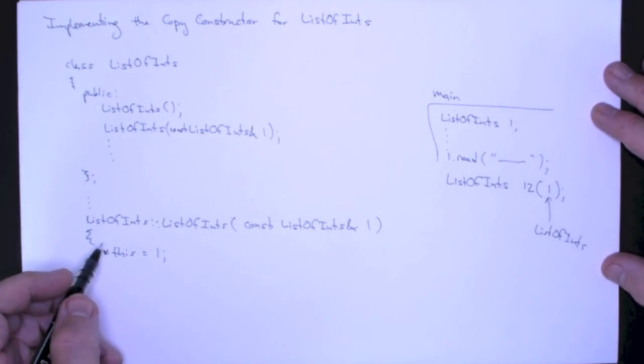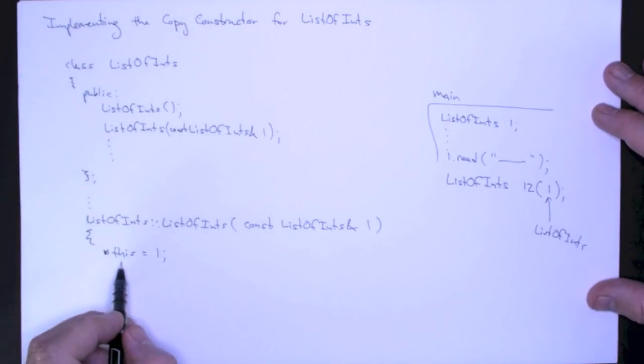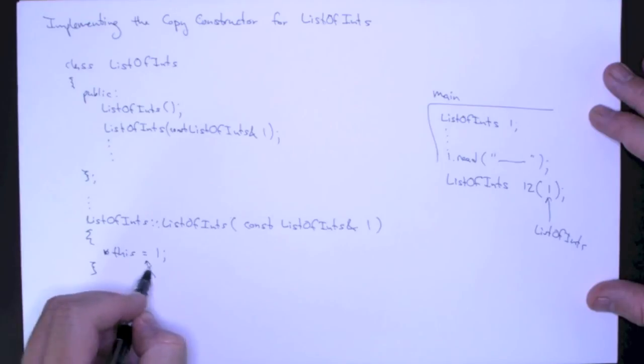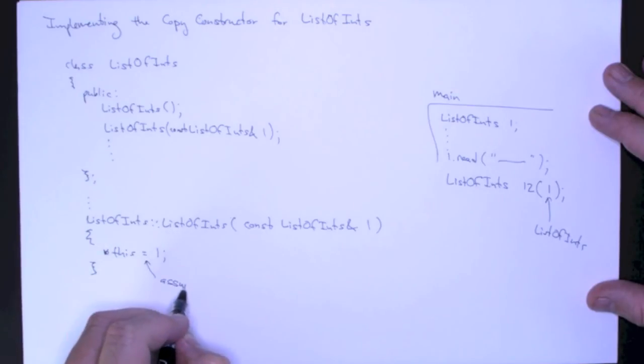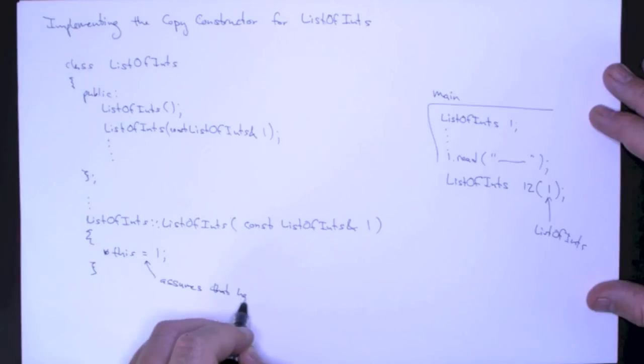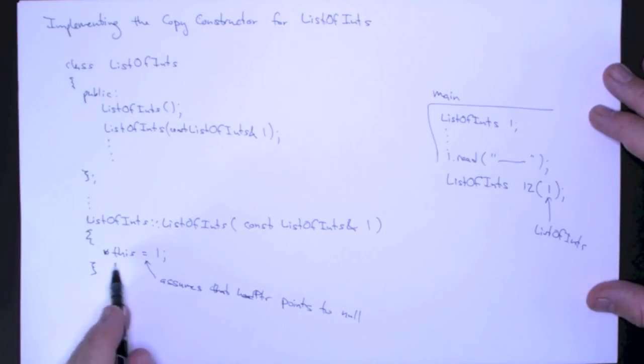Now, the only caveat here is that this copy operation assumes that head pointer points to null. Well, what does head pointer point to? It's unassigned. This is a constructor.